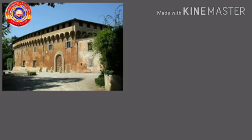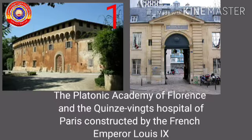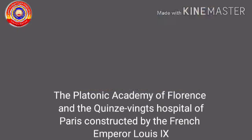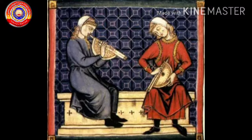The first picture shows the Platonic Academy of Florence and the second shows the Queen's Wings Hospital of Paris. These two were constructed by the French Emperor Louis the 9th. Western music had its beginning in the medieval period, and along with church music, secular music also developed during this period.